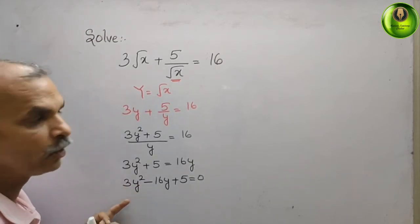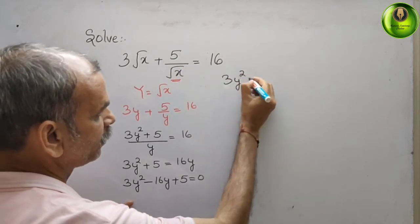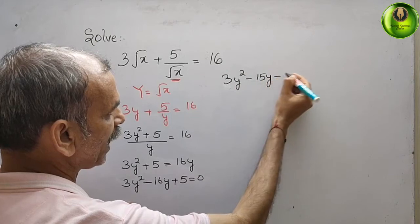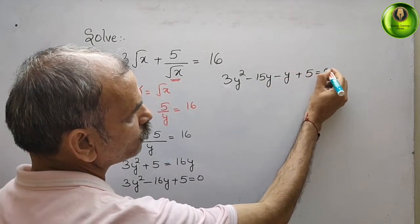Therefore, your equation will come as 3y square minus 15y minus y plus 5. That gives you 0.